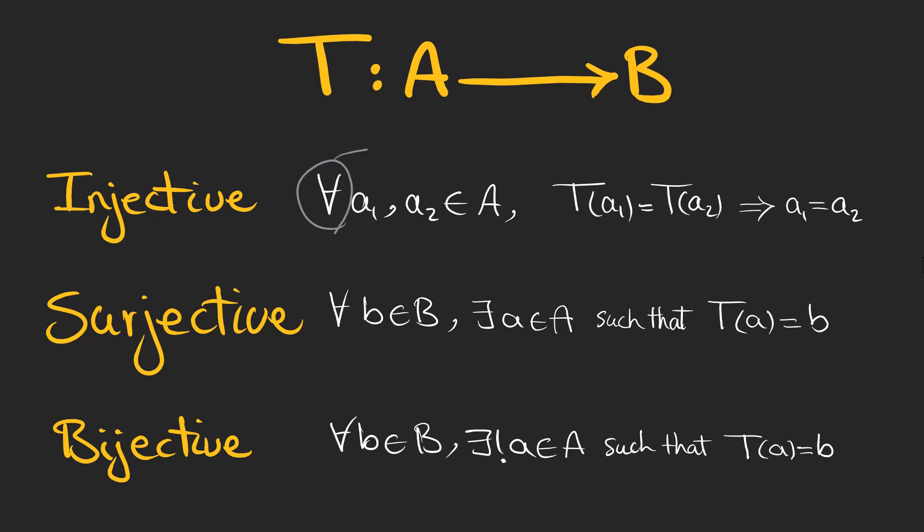This symbol means for every, this one means there is or there exists—meaning that it can be more than one—and this one means there's only one.